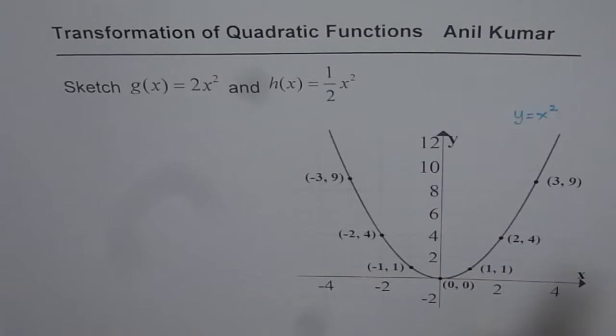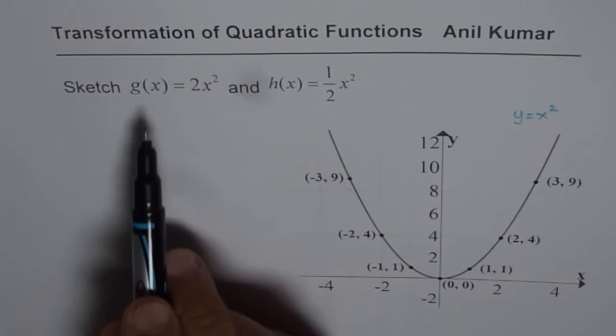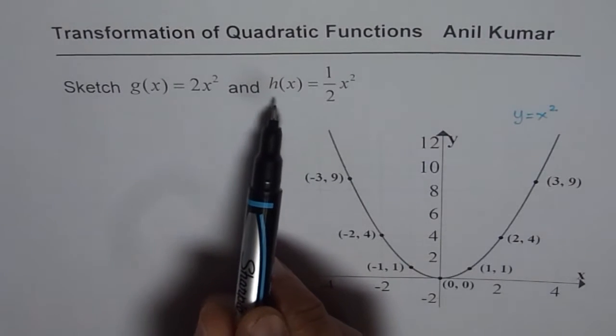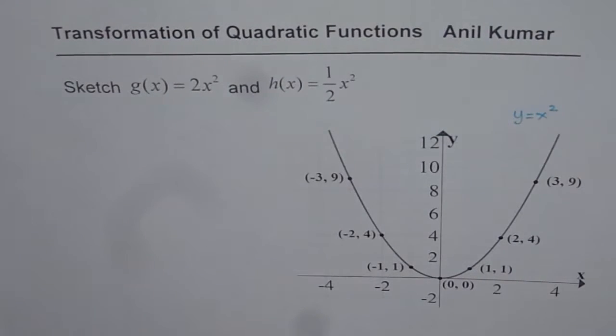From this parent function y equals to x square we will sketch two other functions: g of x equals to 2x square and h of x equals to half x square.